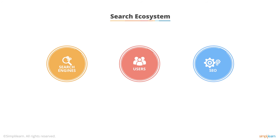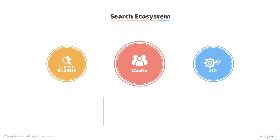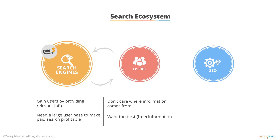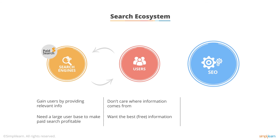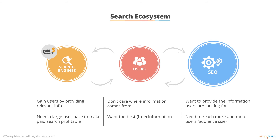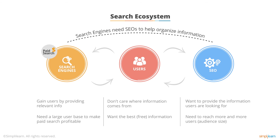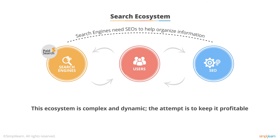Now that we have the major players and their incentives identified, let's look at the relationship between them. Users are just looking for relevant information and don't care where they get it — they just want the best, most convenient, largely free information. Search engines focus on getting a worldwide audience by providing relevant results and running ads to be profitable. SEOs want to provide relevant information as long as it's their client's or their own. On a day-to-day level, this relationship shifts — search engines and SEOs work together one day and fight a little the next, keeping the profession complex, interesting, and most importantly, profitable.